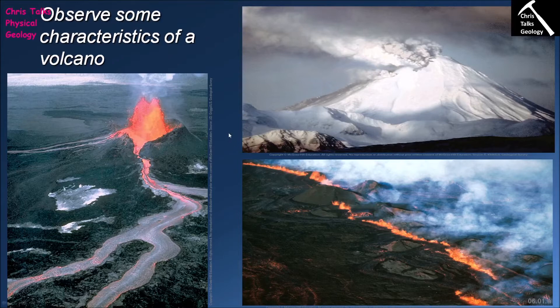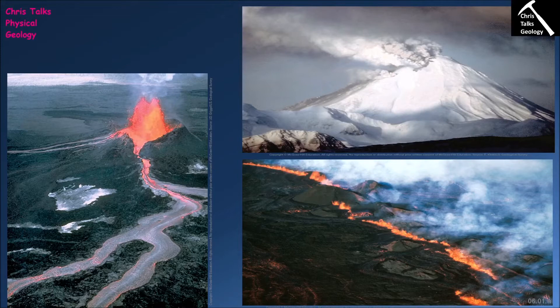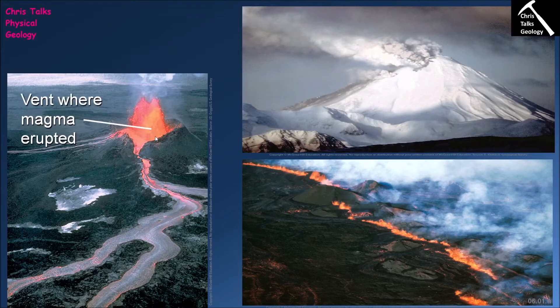Volcanoes form where we have magma exiting the subsurface and being erupted onto the surface of the earth — either on the continents or on the seafloor. A volcano essentially forms where magma vents onto the earth's surface, leading to a buildup of material around that vent. The point where the magma is venting is often marked by what we refer to as a crater — a depression in the volcano that marks the position of the vent through which volcanic material is exiting.